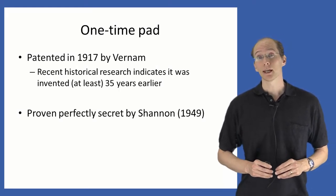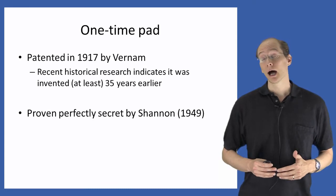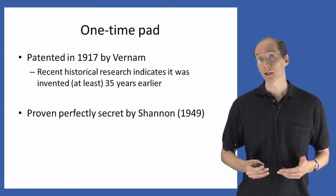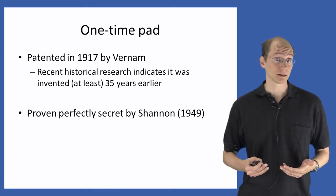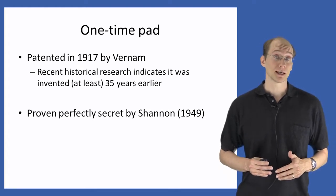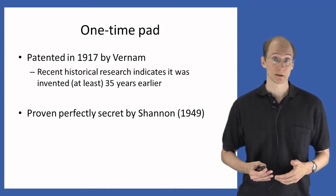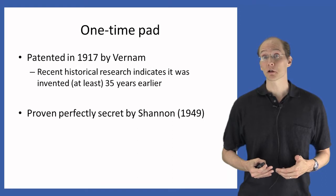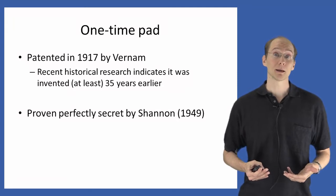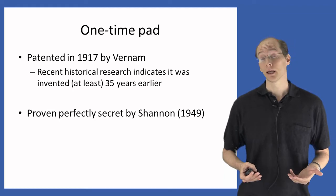The scheme that achieves this definition is known as the one-time pad. This scheme has an interesting history — it was patented in 1917 by Vernum, although recent historical research indicates it was invented at least 35 years earlier. There was no notion of perfect secrecy until the later work of Shannon in the 1940s. In addition to defining perfect secrecy, Shannon also proved that the one-time pad scheme does indeed achieve that definition, i.e., that the one-time pad is indeed perfectly secret.